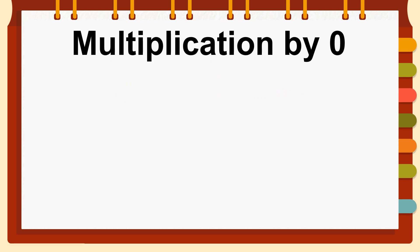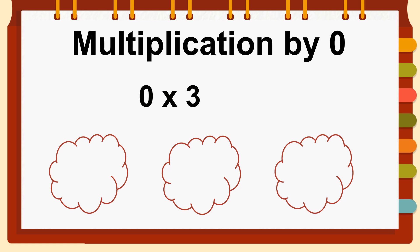Now let's start with multiplication by zero. Here on the screen we have zero times three. Ask yourself what this means — it means three groups of nothing. In total it means zero, or nothing. Here we have three empty groups, one, two, and three, and in each group we have nothing.